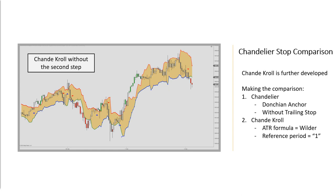To conclude: the initial step of the Chande Kroll is identical to the Chandelier Stop. By adding the second step — the reference period of the preliminary stops — we arrive at the Chande Kroll plots. They are further removed from price than the Chandelier, and therefore you may apply a smaller ATR multiplier and a shorter lookback period than you would for the Chandelier.